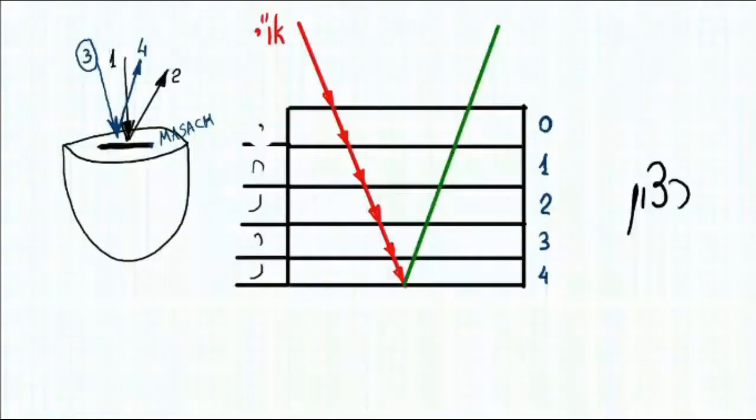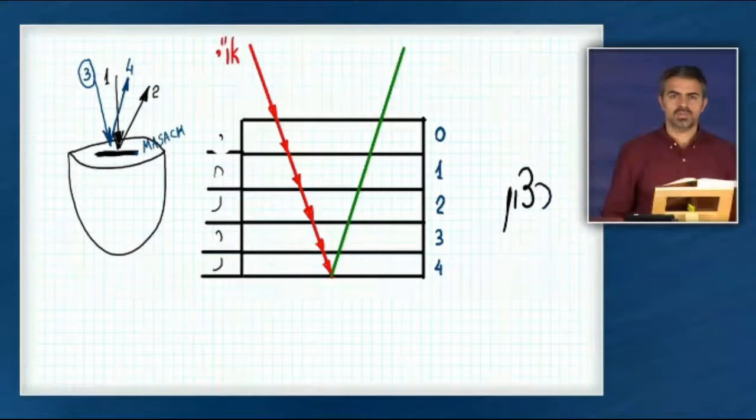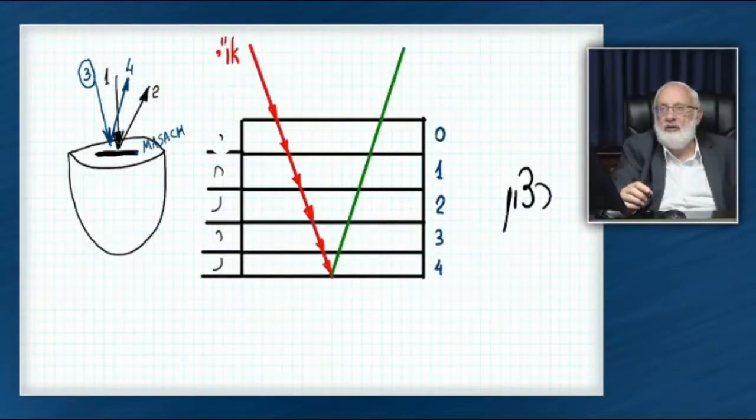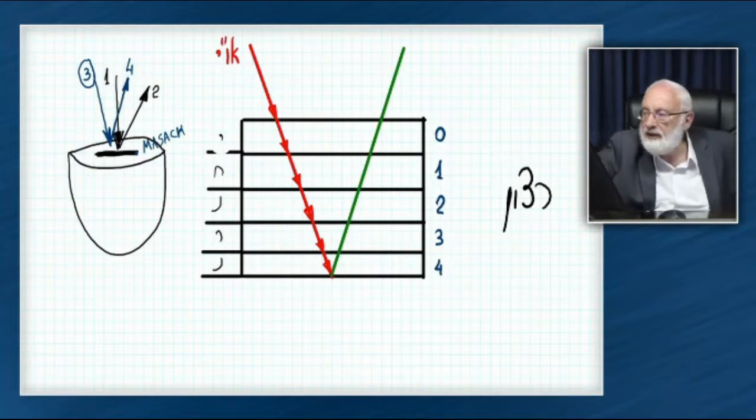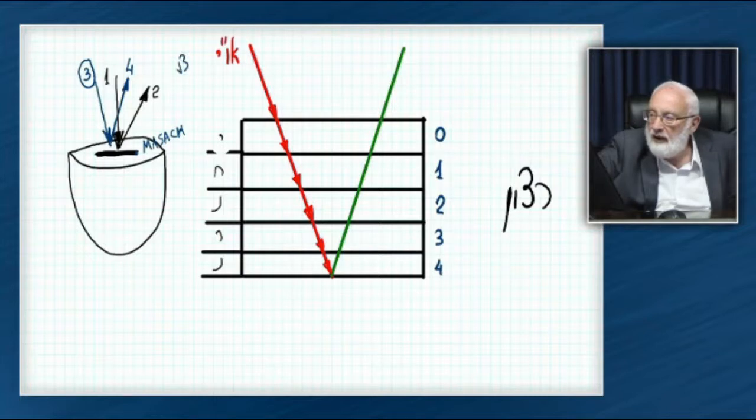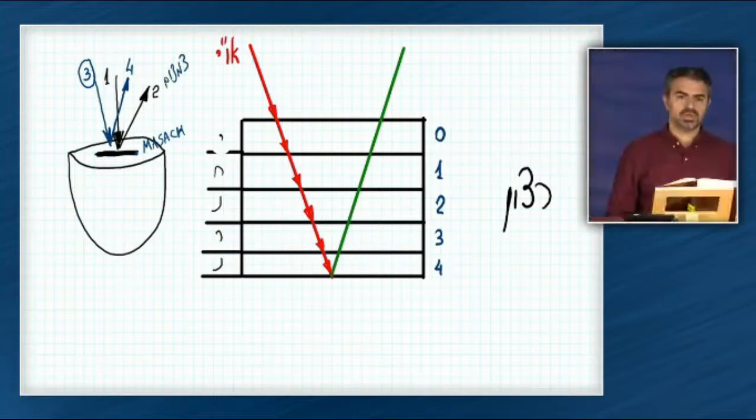Question about the drawing - it's not clear what is number two. The upper light comes from restriction. This is the tzimtzum that rejects everything, that's called tzimtzum. Number two is that tzimtzum, and then what happens?